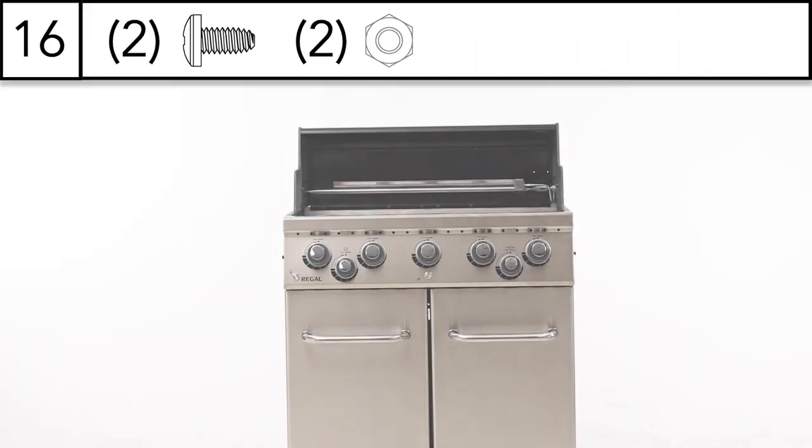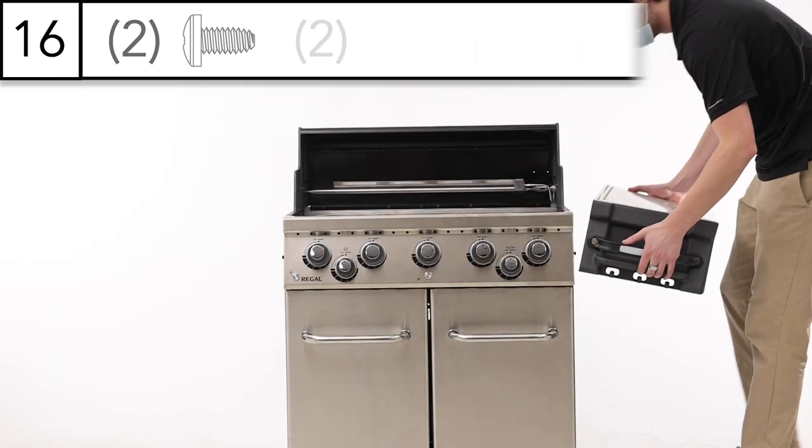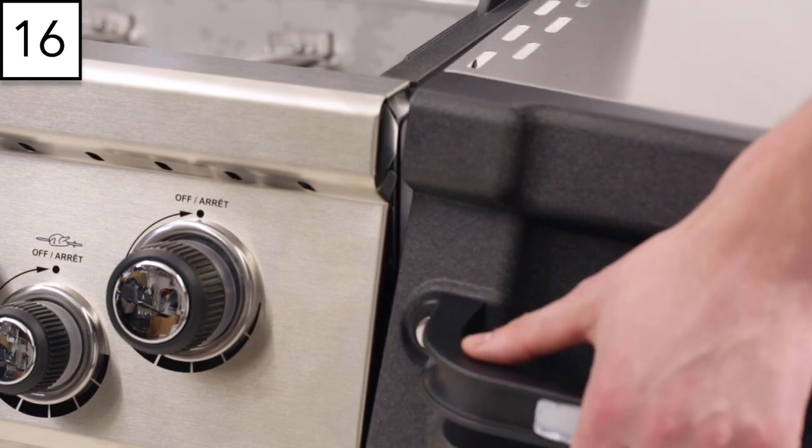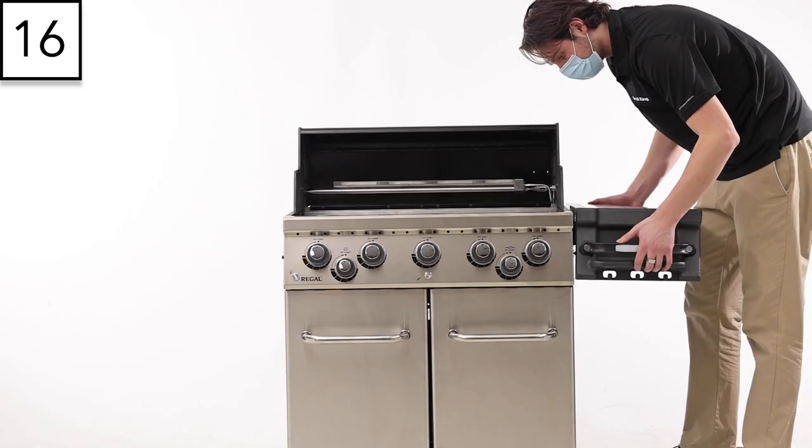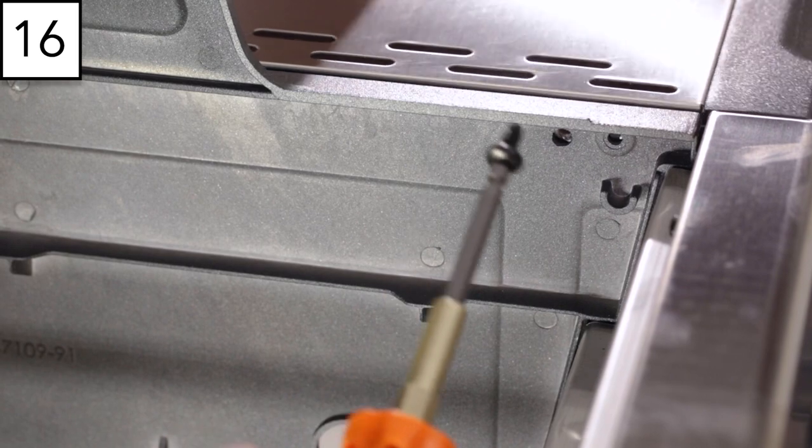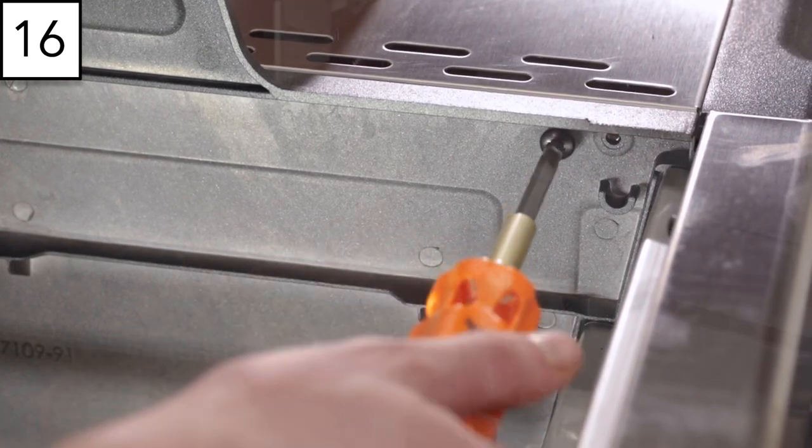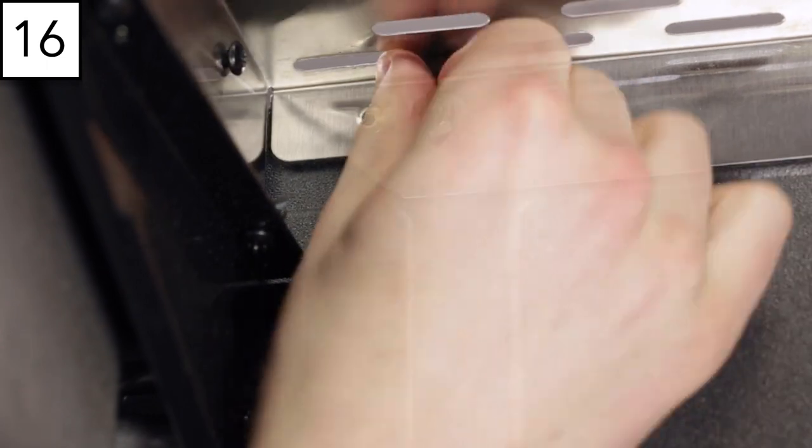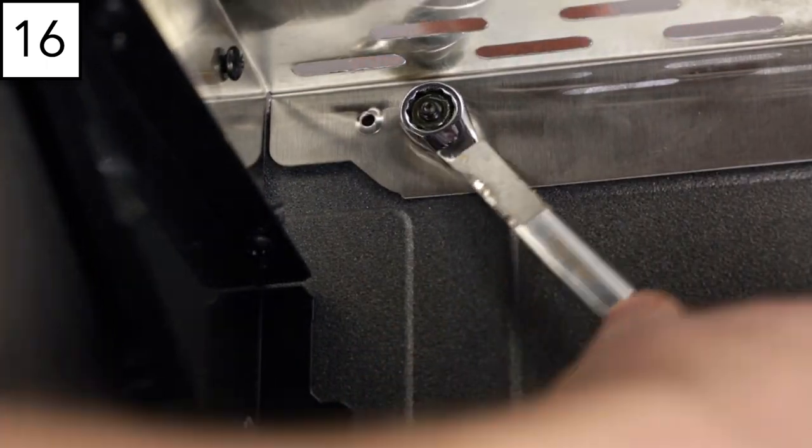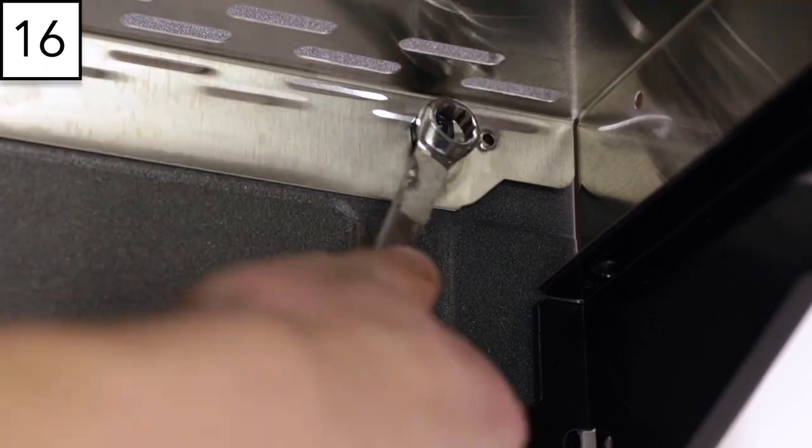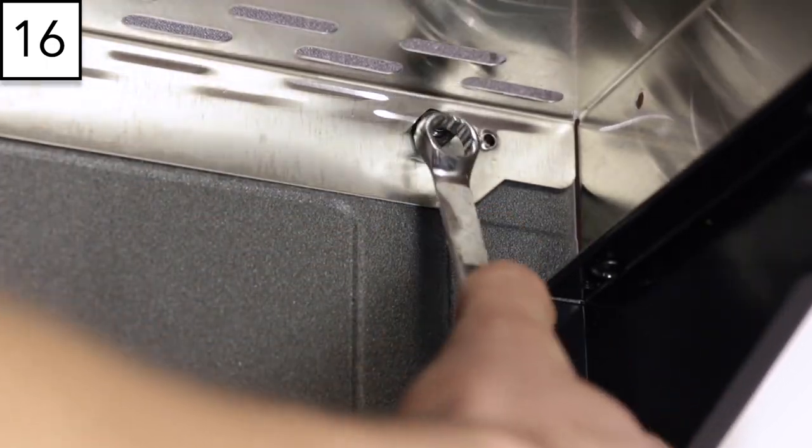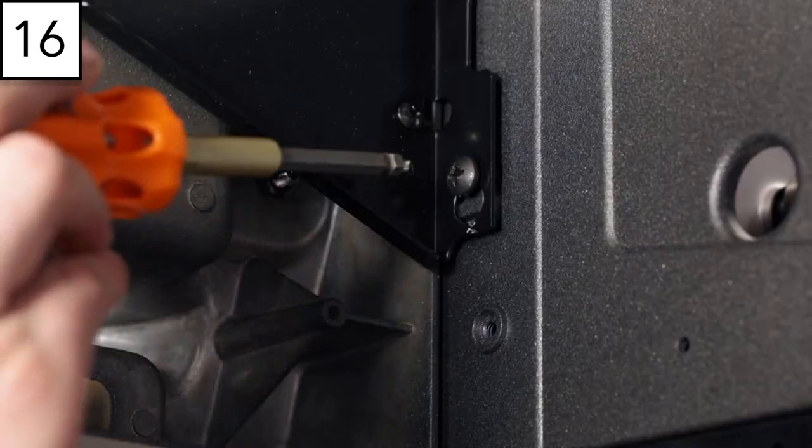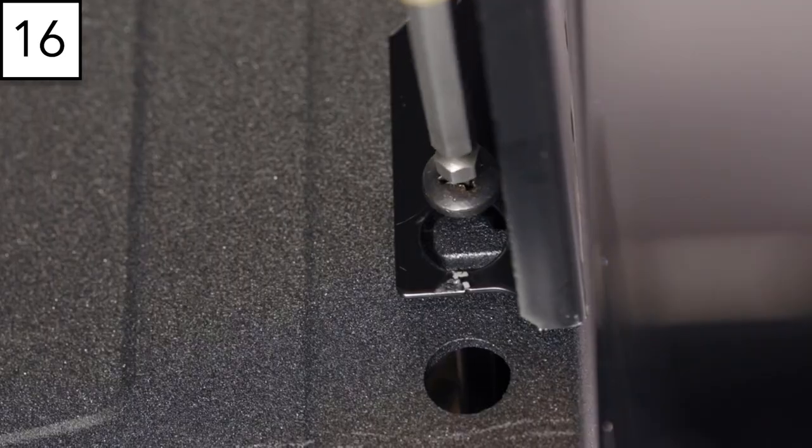Step 16: Install the right-hand shelf on your grill. Align the keyhole opening on the shelf with the pre-installed screws. From the inside of the cook box, secure the shelf using two screws. Then secure a nut onto each of the screws using a wrench. Finally tighten the pre-installed screws from the beginning of this step.